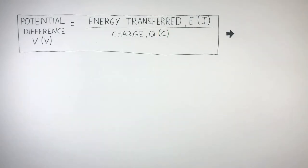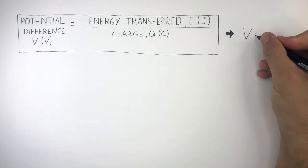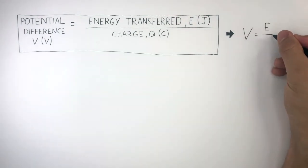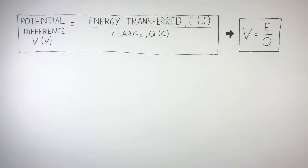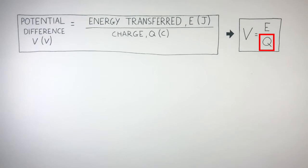We can write this equation just using the symbols, where V equals E over Q. Potential difference equals energy transferred divided by charge.